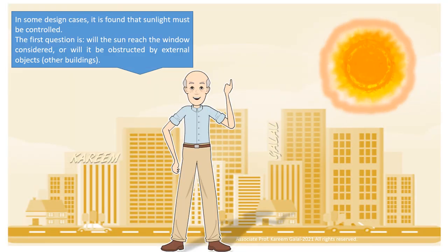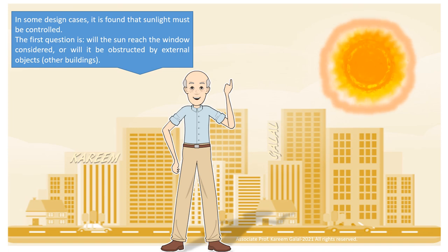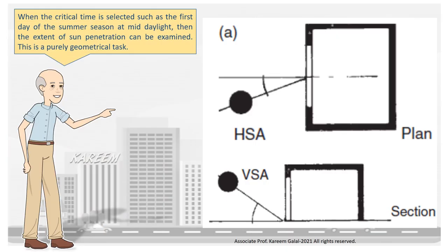In some design cases, it is found that sunlight must be controlled. The first question is: will the sun reach the window considered, or will it be obstructed by external objects such as other buildings? When the critical time is selected, such as the first day of the summer season at mid-daylight, then the extent of sun penetration can be examined. This is a purely geometrical task.